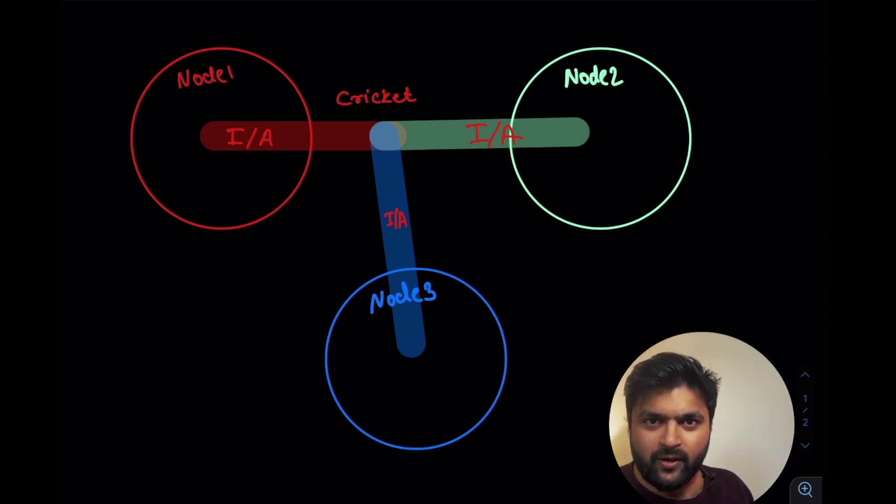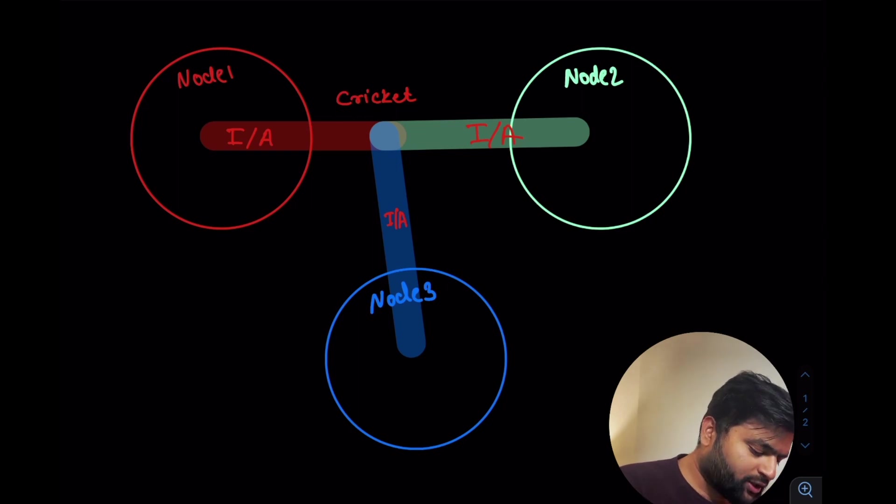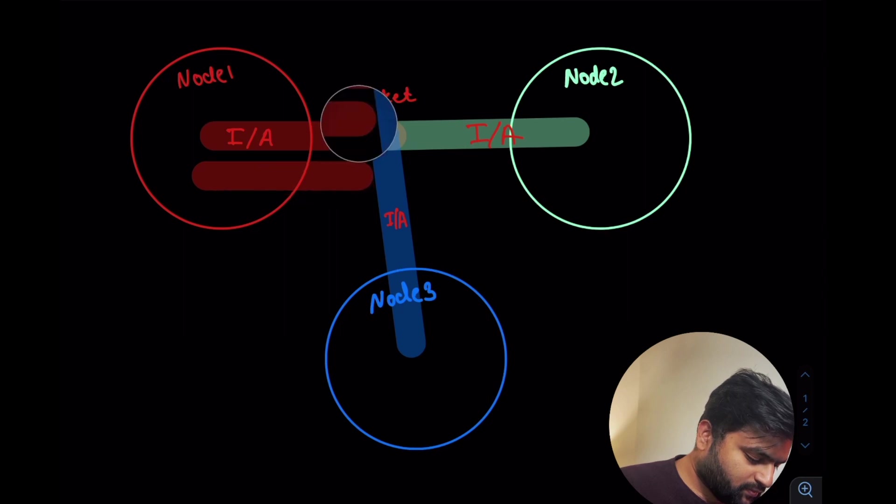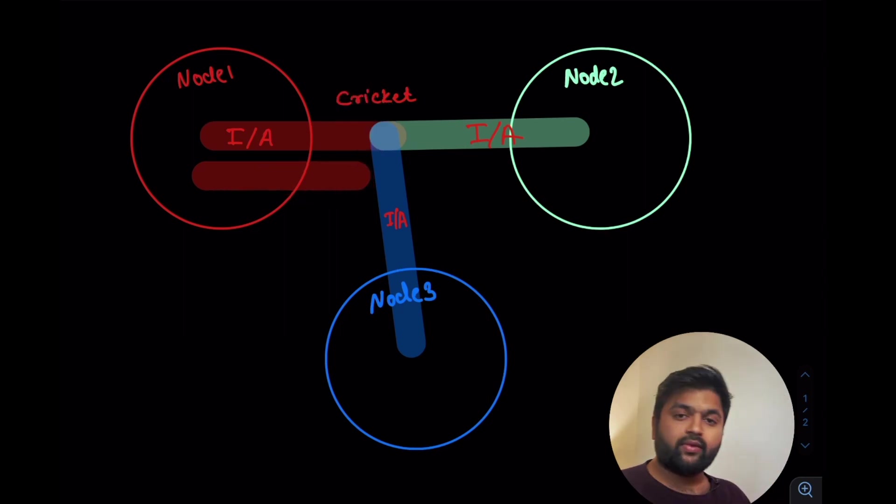There was one more match going on in football. In that as well there were two teams playing and one of them won. So node 1 had one more information it had to give. It was Italy and Portugal, whoever won this. But this time the topic is not cricket, the topic is football.